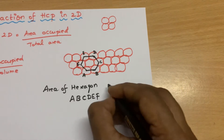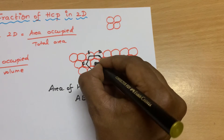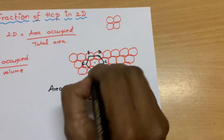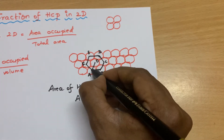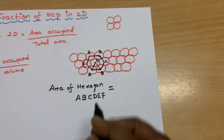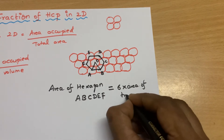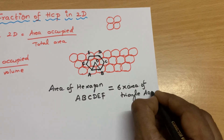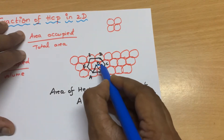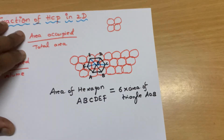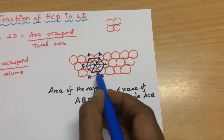So the area of the hexagon — I am going to label the centre point as O. If I draw a triangle, the area of the hexagon equals 6 times the area of triangle AOB. You can see how many such triangles can be drawn in this hexagon — 6 such triangles. So the area of the whole hexagon is 6 times the area of this particular triangle.